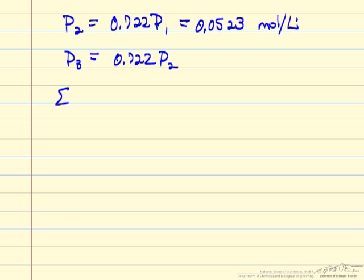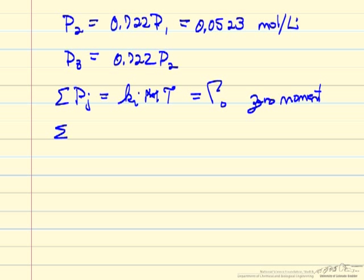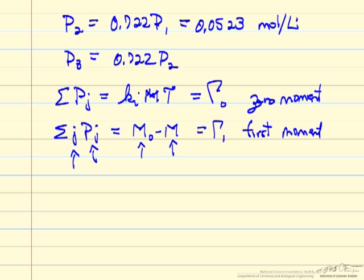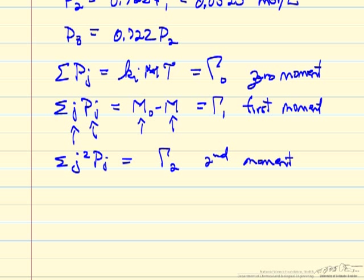Some of the other terms we want to calculate: the sum of all the polymers, which we showed in the previous video, is defined as the zero moment (γ₀). Another term that's useful is the summation of j times the polymer concentration Pj — where j is the number of monomers in the polymer — so this summation is the total number of monomers in polymers, which equals the inlet monomer concentration minus the outlet monomer concentration. This is defined as the first moment (γ₁). And the summation of j² times Pj is defined as the second moment (γ₂). As you can visualize in a spreadsheet, it's very easy to calculate these moments.